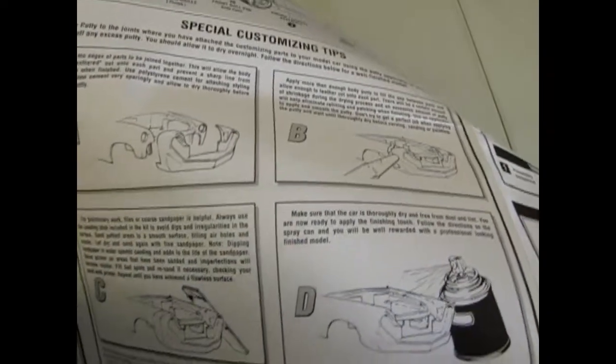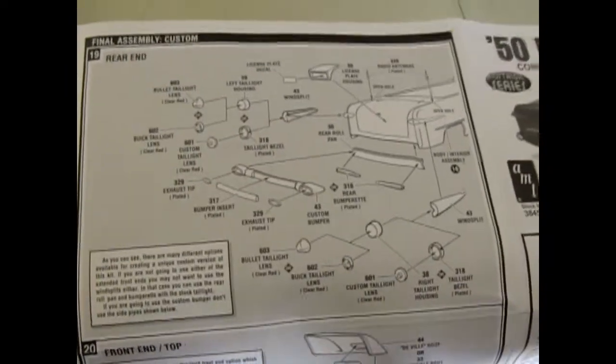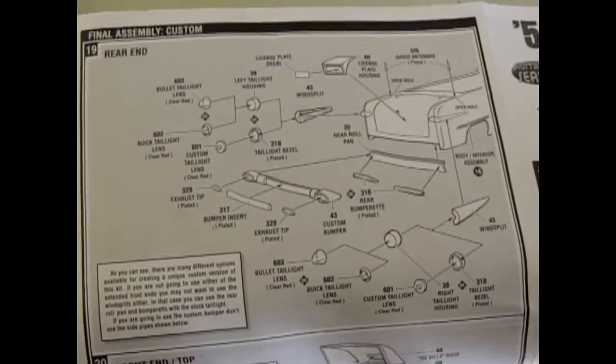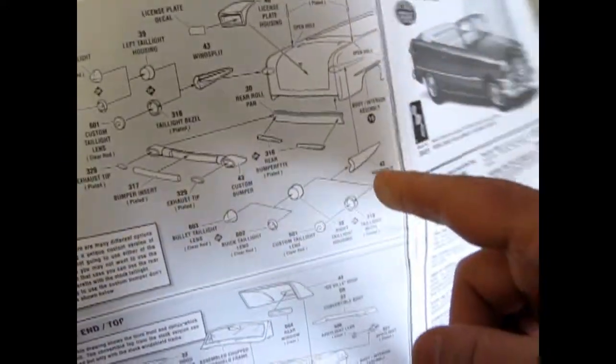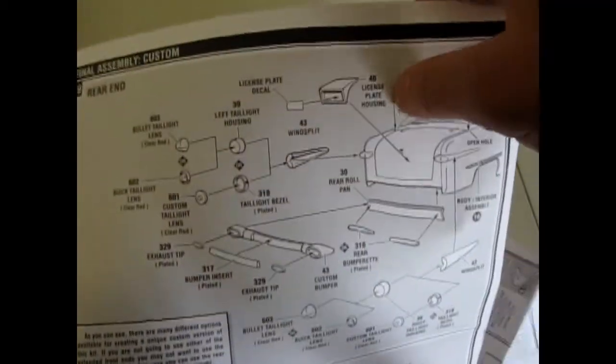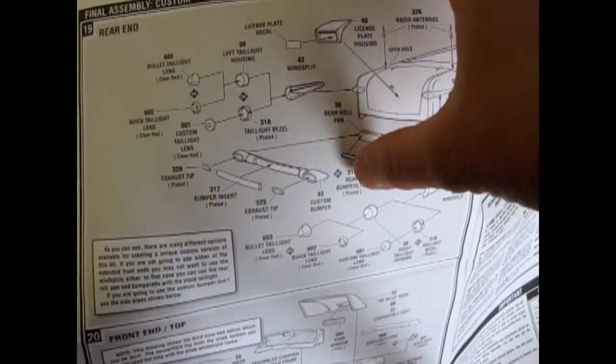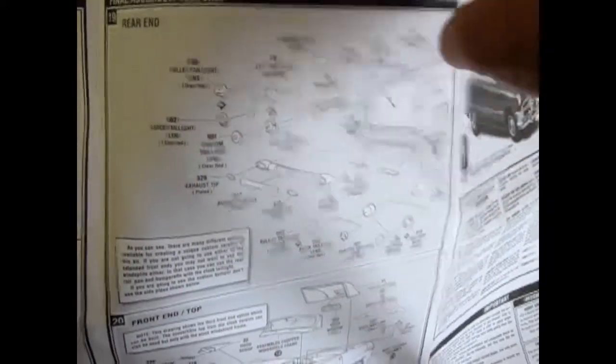Here's special customizing tips for how to put your front ends on. And then here is the custom rear end of the car. And you get a whole bunch of details. You get these little wind splits. You get torpedo style tail lights. A license plate housing. The exhaust tips. An exhaust custom bumper.